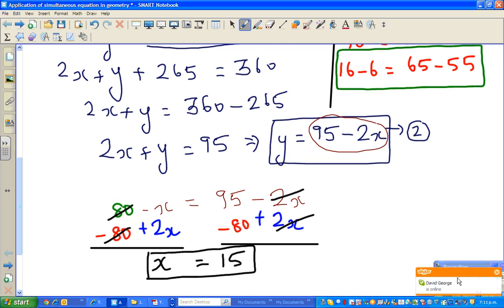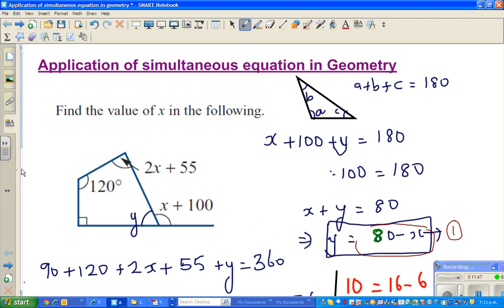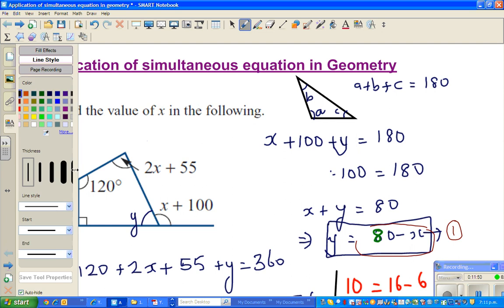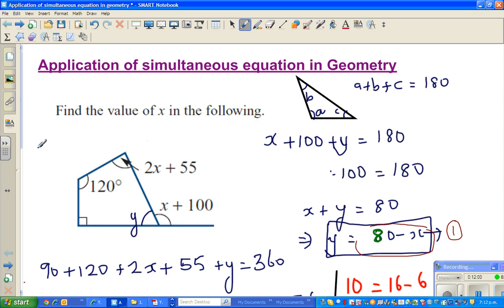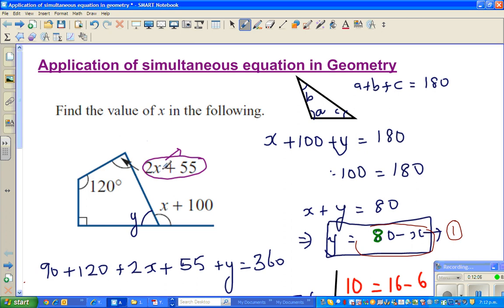Now it's always good to go back and check your answer. x is 15. So let us put your answer back into the question and see whether it makes sense. So what was x? x was 15. So this angle becomes 2 times 15 is 30, plus 55, so this is 85 degrees. So this becomes 115 degrees.